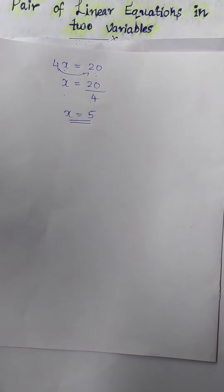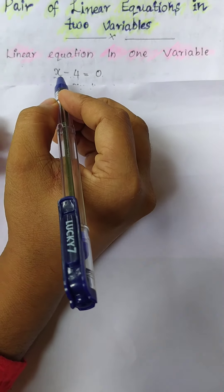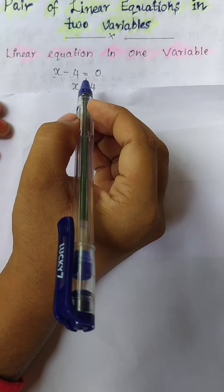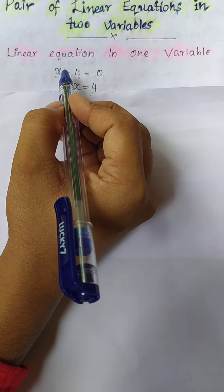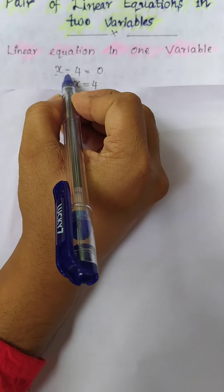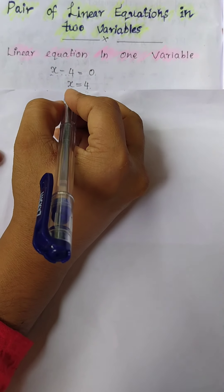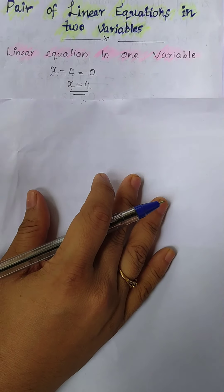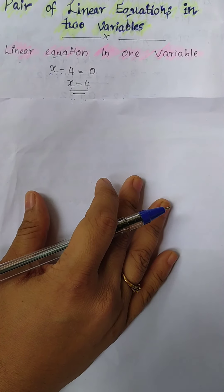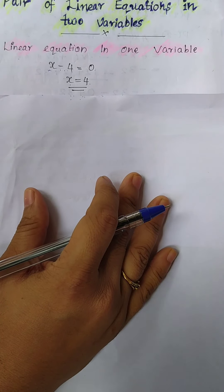This is an equation in one variable. Here x minus 4 equals 0. There is only one variable present — one variable and one constant. So x minus 4 equals 0. When we move the constant from the LHS to the RHS, the sign changes. Here the sign is subtraction, so when it moves to the RHS it becomes plus. Therefore x equals 4. This type of linear equation is called a linear equation in one variable, which we studied in 9th standard.